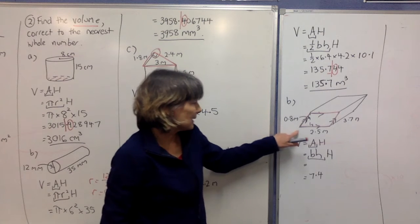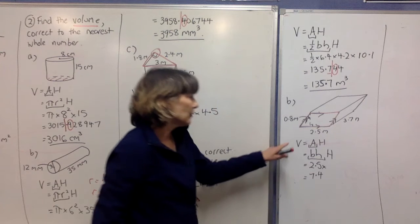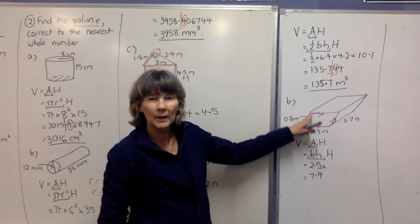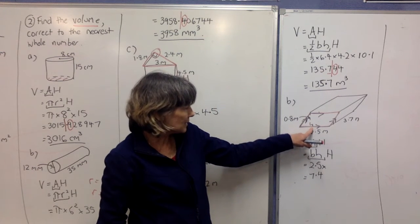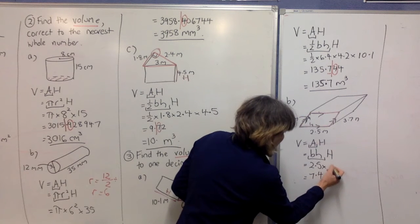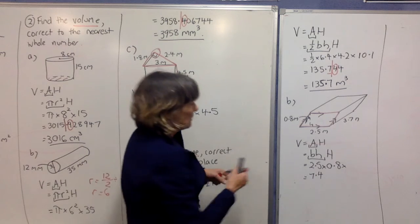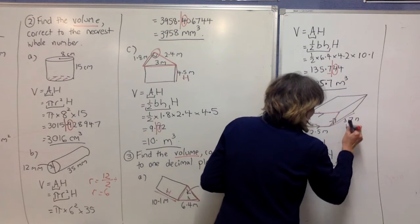Concentrate on that. Your base is 2.5. The perpendicular height of your base shape is 0.8—comes off the base at right angles to the other opposite side. We've got a 0.8 there.